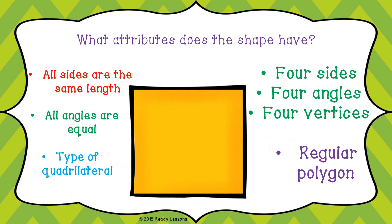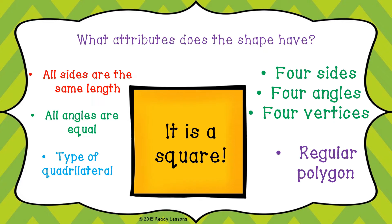Do you know the name of this shape? It is also a quadrilateral. It is a square. A square has four equal sides, and all angles are equal. It has four sides, four angles, and four vertices. This is an example of a regular polygon.